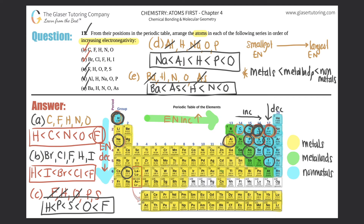That was a good question — it made you think about how to arrange electronegativity values. Just remember: metals are always less than metalloids, which are always less than non-metals, as far as electronegativity goes. Let me know in the comments what you thought; if you have any questions, I'll always answer.